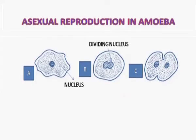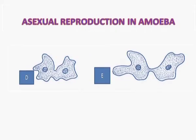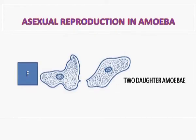In binary fission, the nucleus divides first, followed by the cytoplasm. A constriction or furrow appears in the middle, which deepens, and ultimately two daughter Amoebae are formed, as you can see in the diagram.